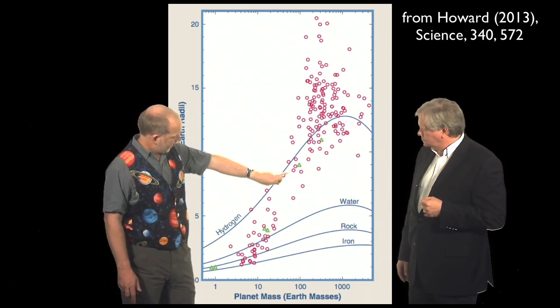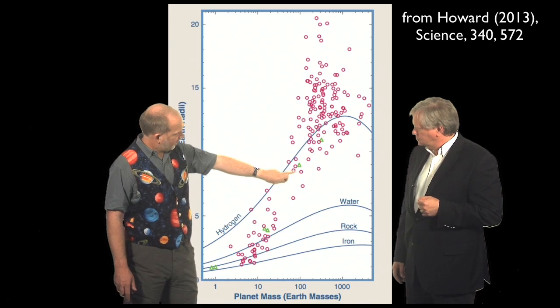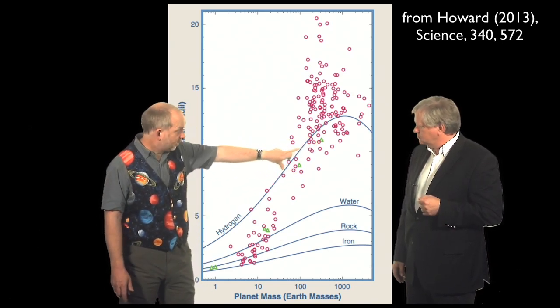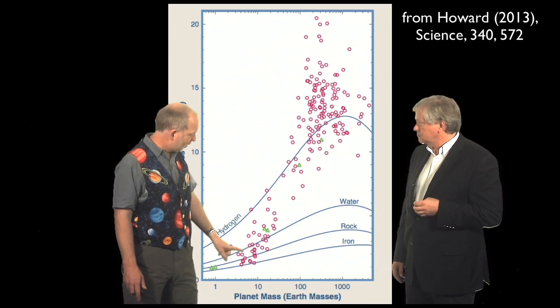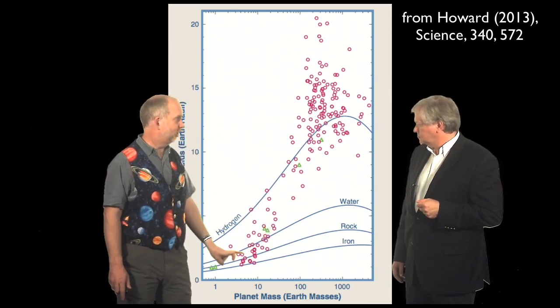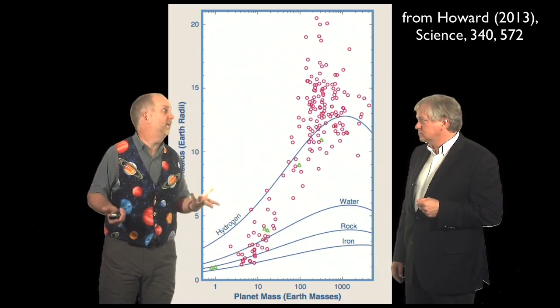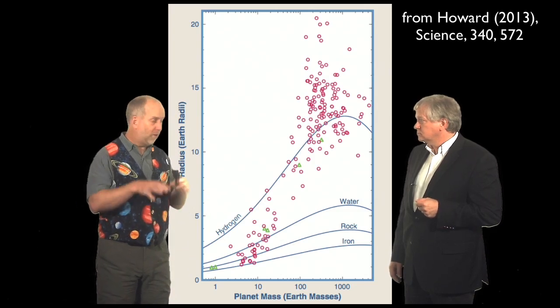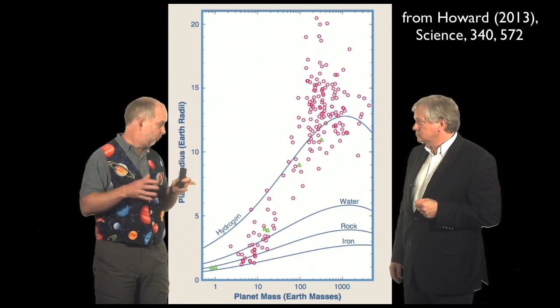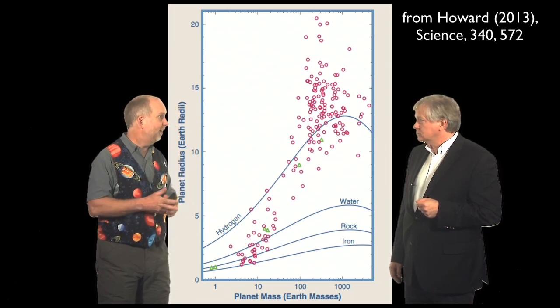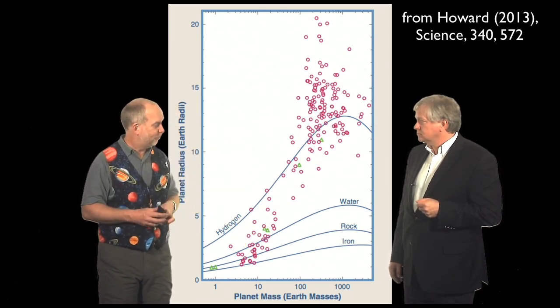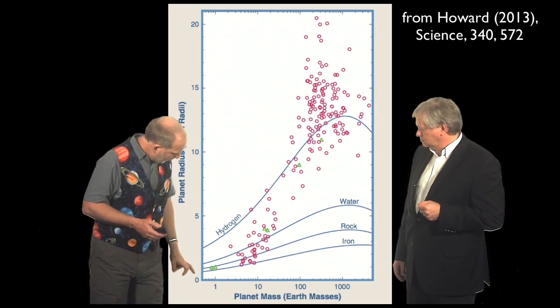Yeah, one thing you can see is if you look at the Saturn and Jupiter, they lie near the hydrogen line, whereas the radius of Neptune actually, while they look like gas giants from the outside, actually lie near the water line. And in fact, people in our own system would call them ice giants rather than gas giants. While they have the gaseous atmosphere on the basis of their density and radius, they're probably made mostly of a thick ball of ice with a thin layer of gas on the surface of them. And these new planets, where are they sitting?